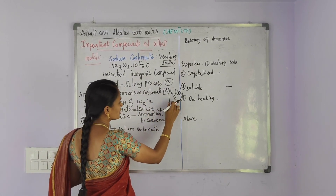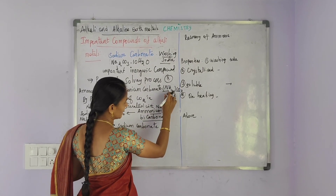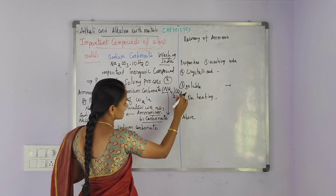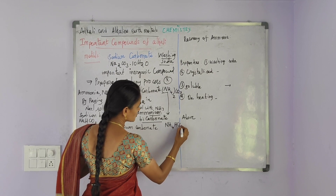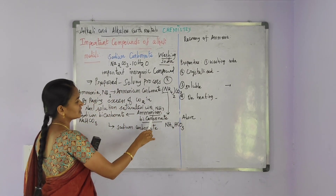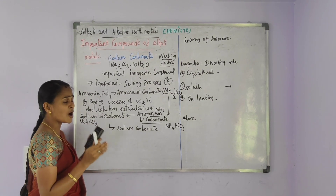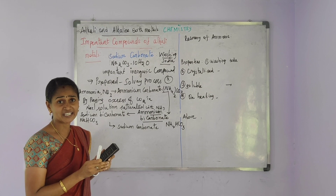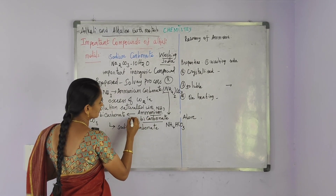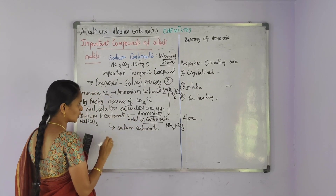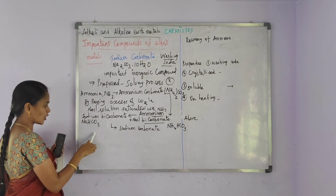And then ammonium carbonate is converted into ammonium bicarbonate, (NH4)2CO3 to NH4HCO3. Ammonium bicarbonate is then treated with sodium chloride and converted into sodium bicarbonate.